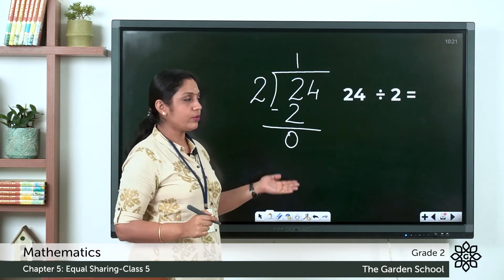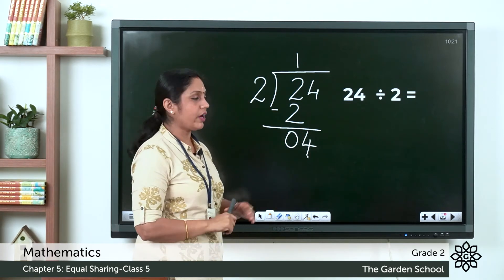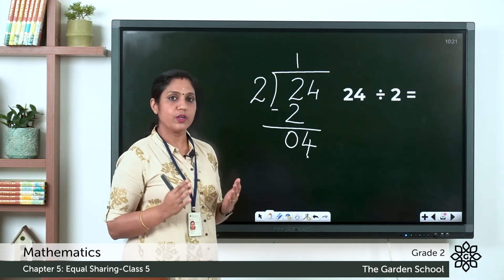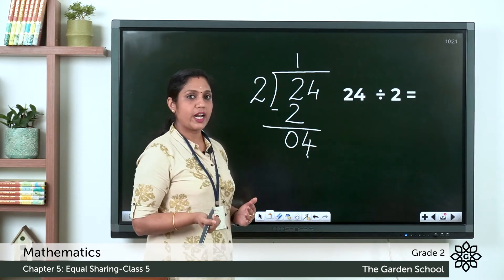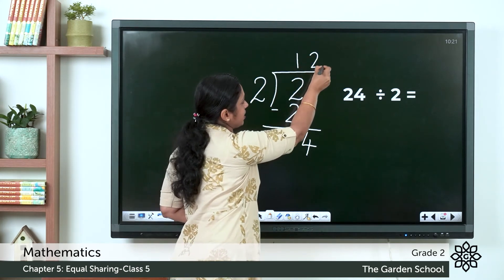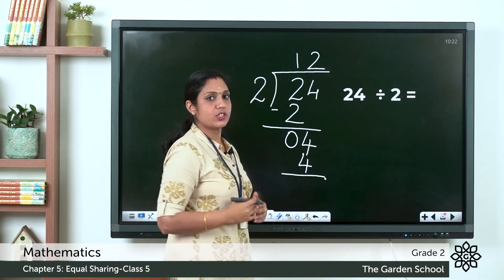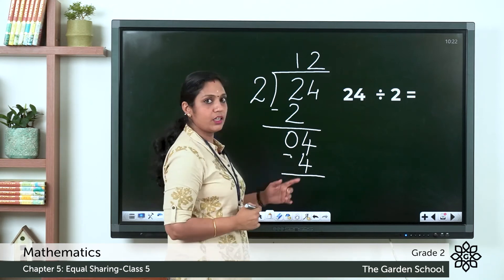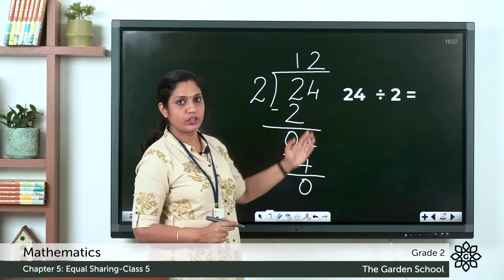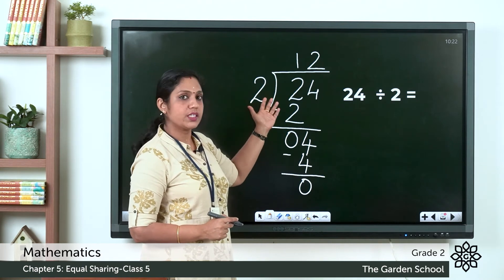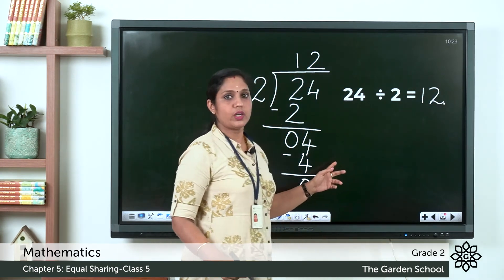We didn't finish our division. Bring the 4 down. Now divide 4 by 2 — 2 ones are 2, 2 twos are 4, so write 2 on top of the ones place. 2 twos are 4, write that under this 4. Subtract: 4 minus 4 equals 0. There is no other number to divide, so we are finished. The answer is 24 divided by 2 equals 12.